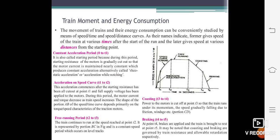Now the next and last topic is train movement and energy consumption. This is the most important topic because it shows how the locomotive train behaves from actual starting to stopping positions. The movement of the train and their energy consumption can be conveniently studied by means of speed-time and speed-distance curves. As their names indicate, the former gives the speed of the train at various times after the start of the run, and the latter gives the speed at various distances from the starting point. You can see the figures.